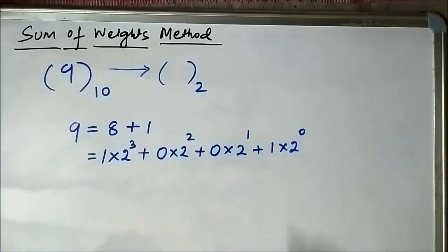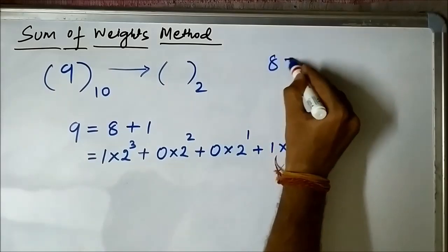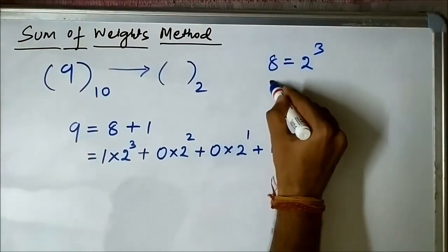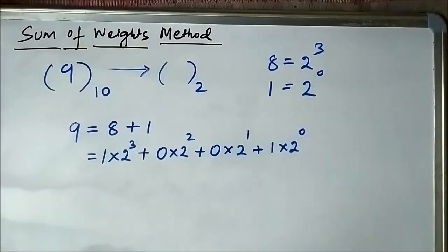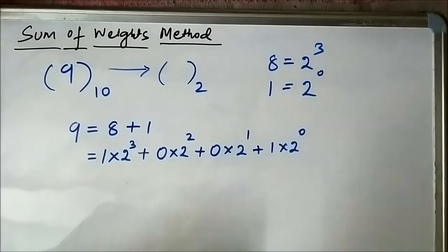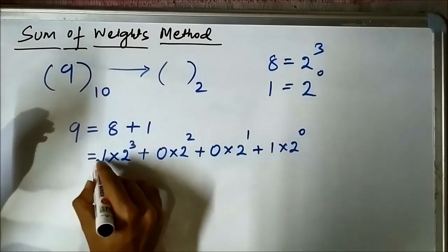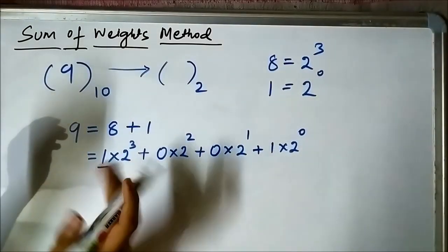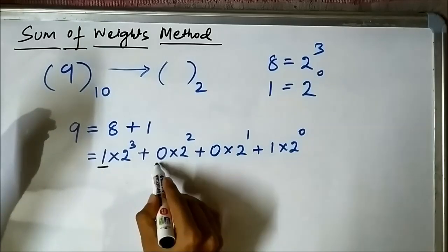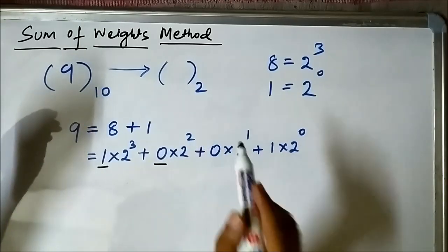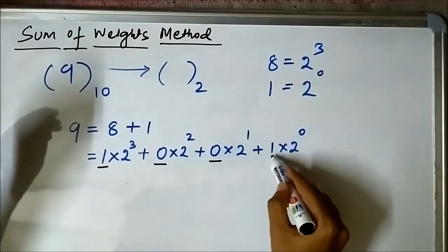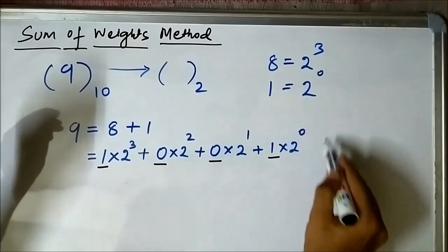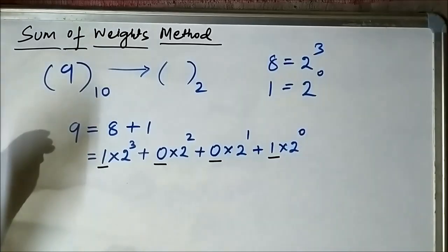We can write 8 as 2 to the power 3, and 1 as 2 to the power 0, and arrange it in this way. Now pay attention to the string of 1s and 0s that we have used: 1 associated with 2 to the power 3, 0 associated with 2 to the power 2, 0 associated with 2 to the power 1, and 1 associated with 2 to the power 0. So 9 in decimal form can be written as 1001 in binary form.